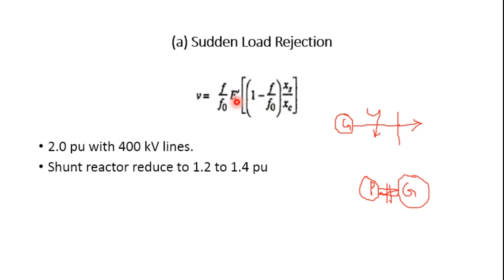E' is the generator voltage before the over-speeding of the prime mover and load rejection. f is the instantaneous increase in frequency, and f₀ is the normal system frequency. This increase in voltage may go as high as two times the rated value if the system voltage is around 400 kV.